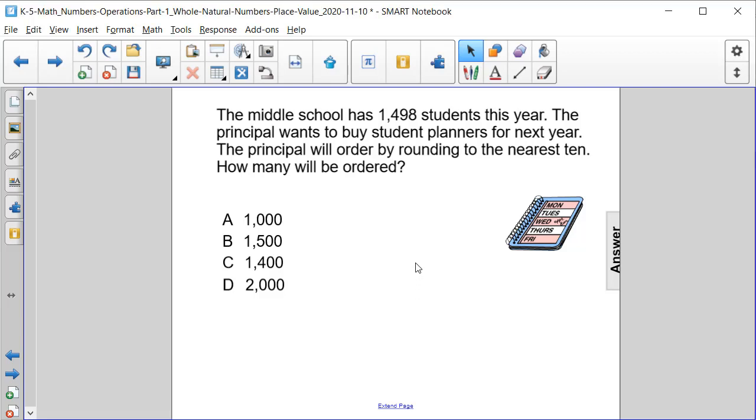The middle school has 1,498 students this year. The principal wants to buy student planners for next year. The principal will order by rounding to the nearest ten. How many will be ordered?